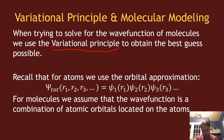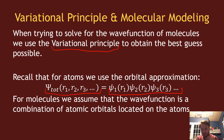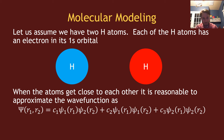In molecular orbital theory, we approximate our total wave function as a product of one-electron wave functions. These one-electron wave functions are molecular orbitals, and those molecular orbitals we assume are a combination of atomic orbitals.